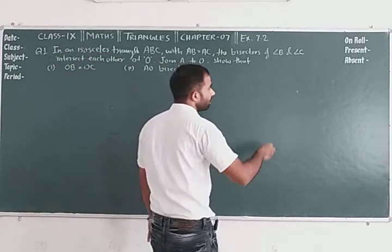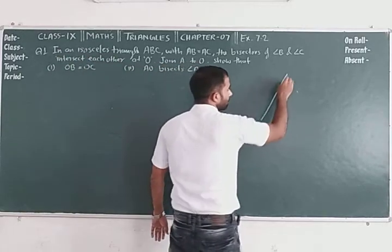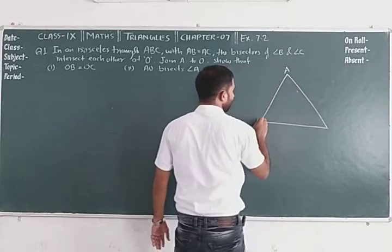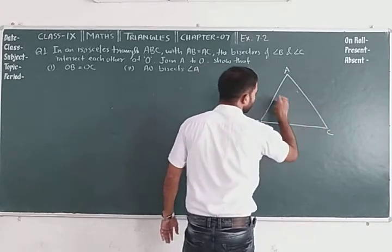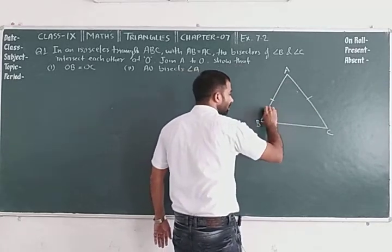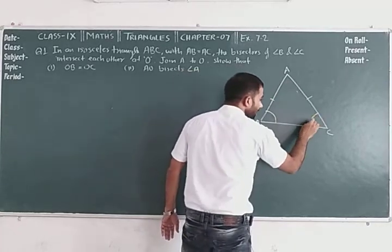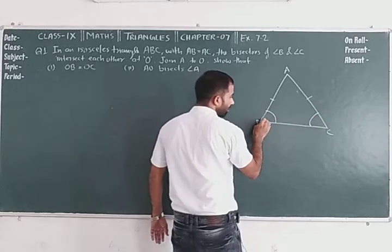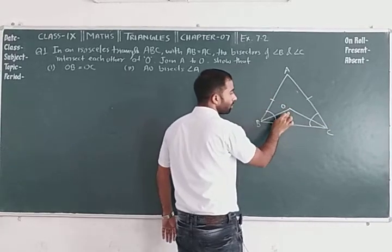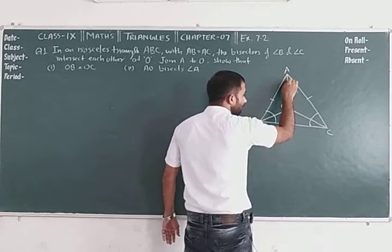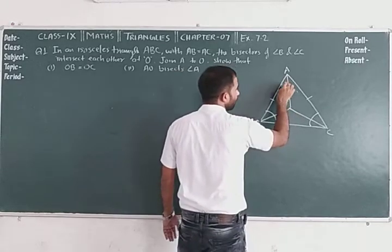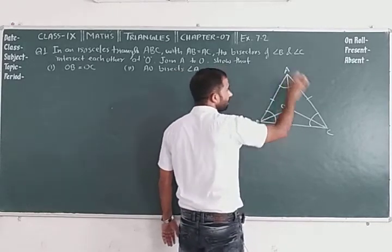First of all, we have to understand the diagram. The diagram is constructed. Triangle ABC is given. AB is equal to AC, so angle B is equal to angle C. The angle B bisector and angle C bisector meet at O. Then you join A to O. And then what do you have to show? OA bisects angle A.